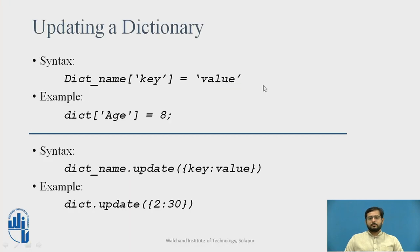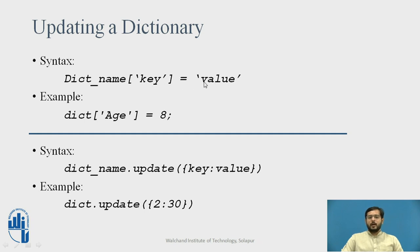Moving forward, how to update a dictionary? If you want to update any value to a key in a dictionary, then we can use the following syntax: dictionary name, in square brackets, you have to specify the key of which the value has been updated, equal to, you have to assign a new value to that key. This is one way you can update the dictionary.